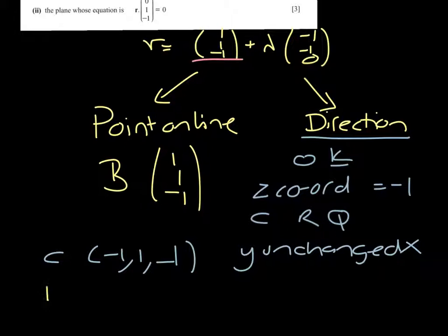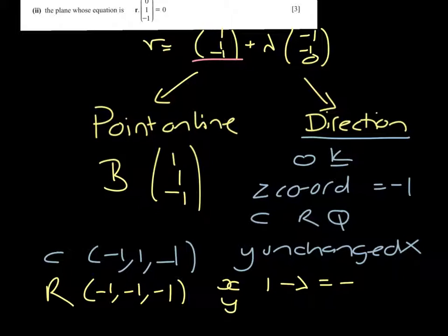If we go to R, it is (-1, -1, -1). So let's look at the x-coordinate and the y-coordinate. 1 minus lambda has to equal -1,